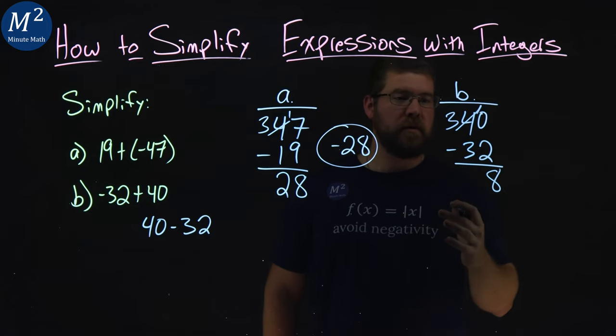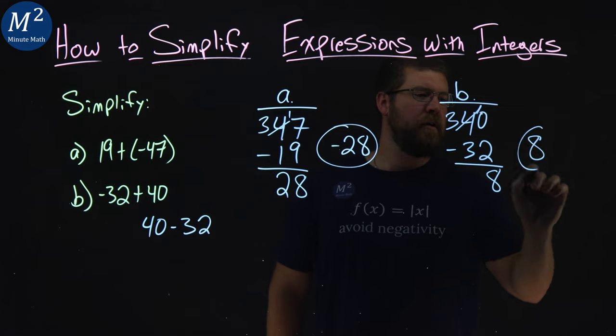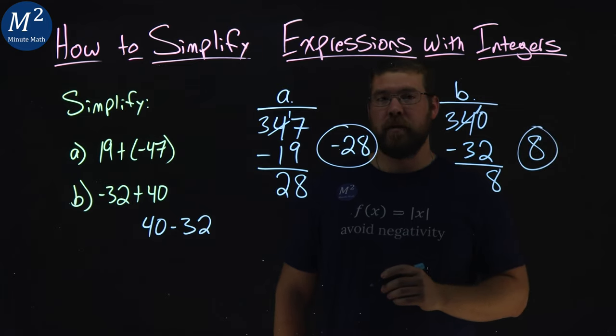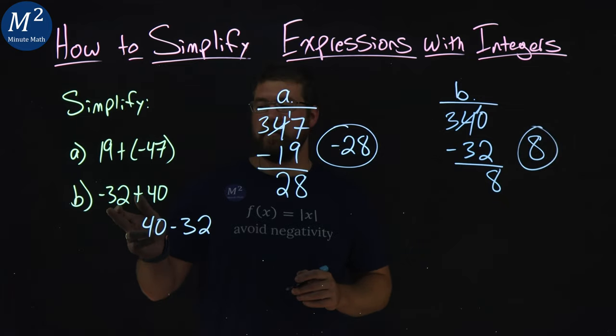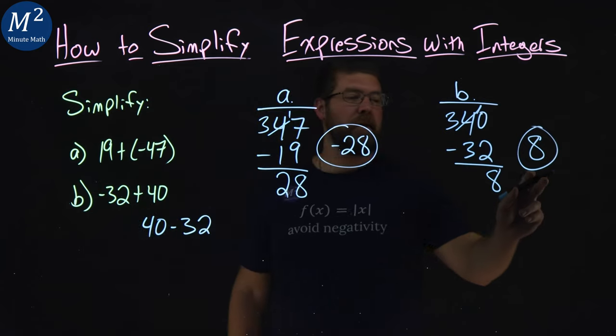3 minus 3 is 0, and so we just have an 8 left over. So our second solution here of negative 32 plus 40 is an 8.